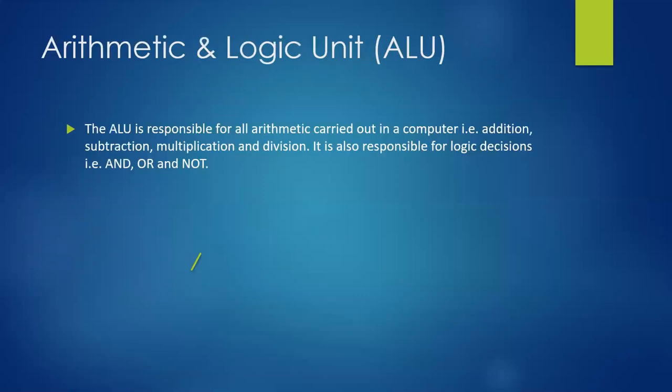So there we go. That's the first one, the arithmetic and logic unit. The arithmetic and logic unit is responsible for all of the arithmetic carried out in a computer, addition, subtraction, multiplication, division, but it's also responsible for logic decisions. So for example, the AND, OR and NOT, which we may use when we're doing some coding. And that's the arithmetic operators that we work with: divide, multiply, subtract and add. So the ALU does carry out all those functions for us.